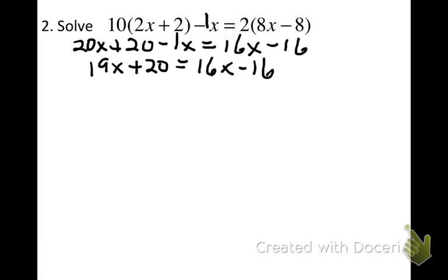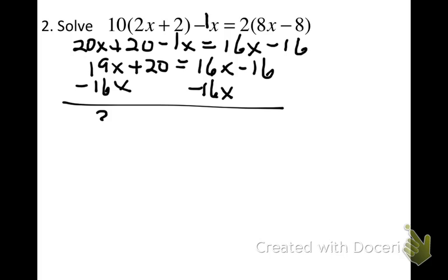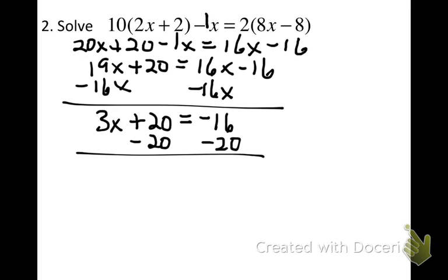Now I can start collecting the variables on one side. 16x is smaller than 19x, so I'm going to move that to the left by subtracting. It's a positive 16, so I do the opposite — subtract — giving me 3x plus 20 equals. This zeros out, and I bring down negative 16. Now moving the number to the opposite side, I get 3x equals negative 16 minus 20, which gives me negative 36. Last step is to undo the multiplication, so x equals negative 12.